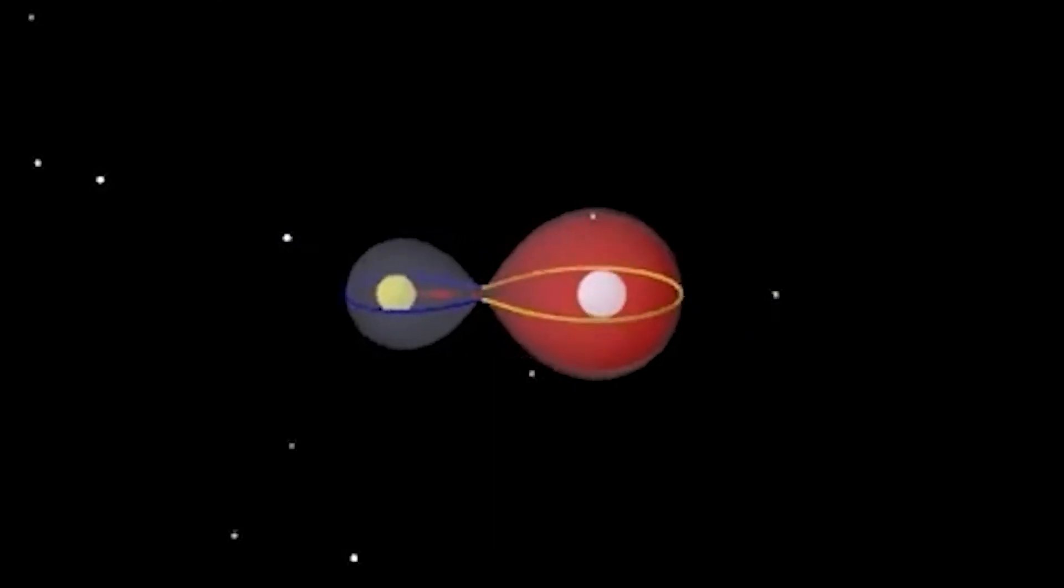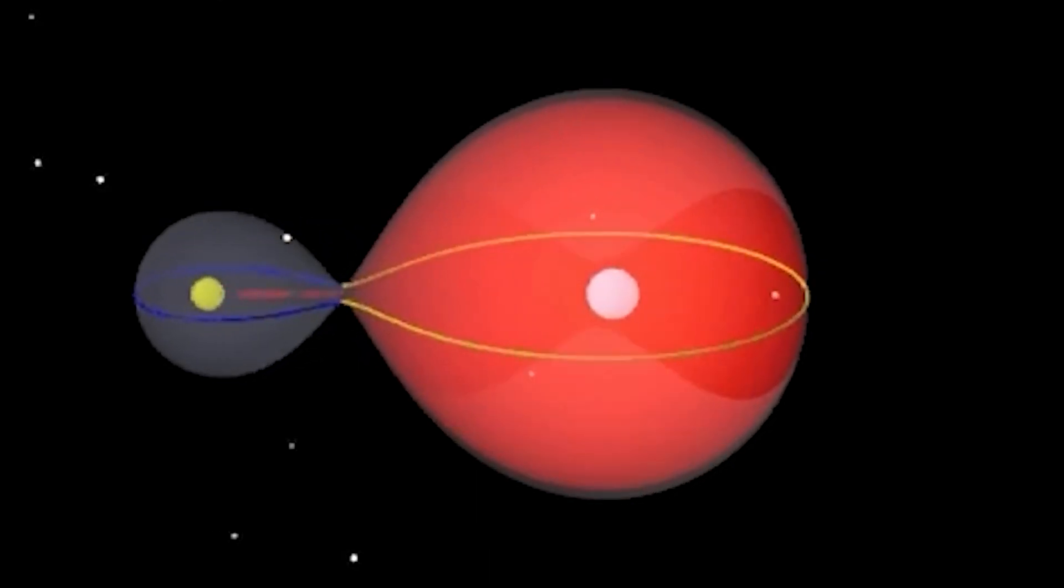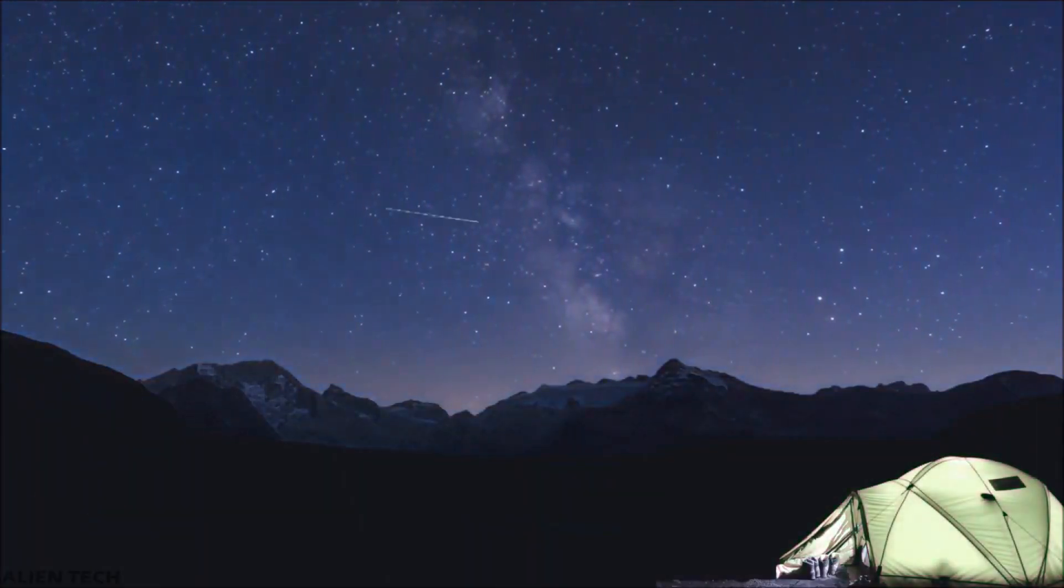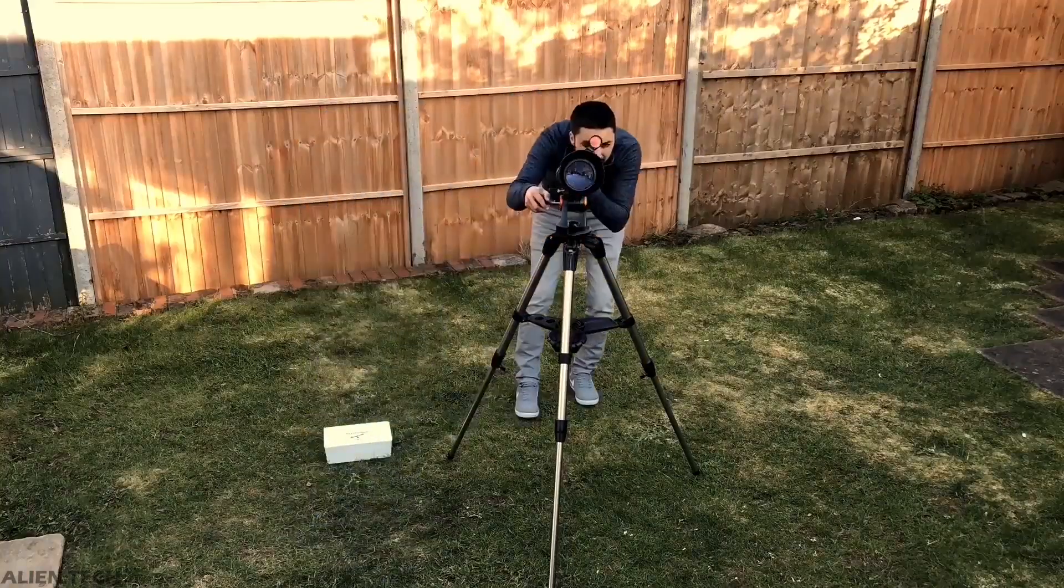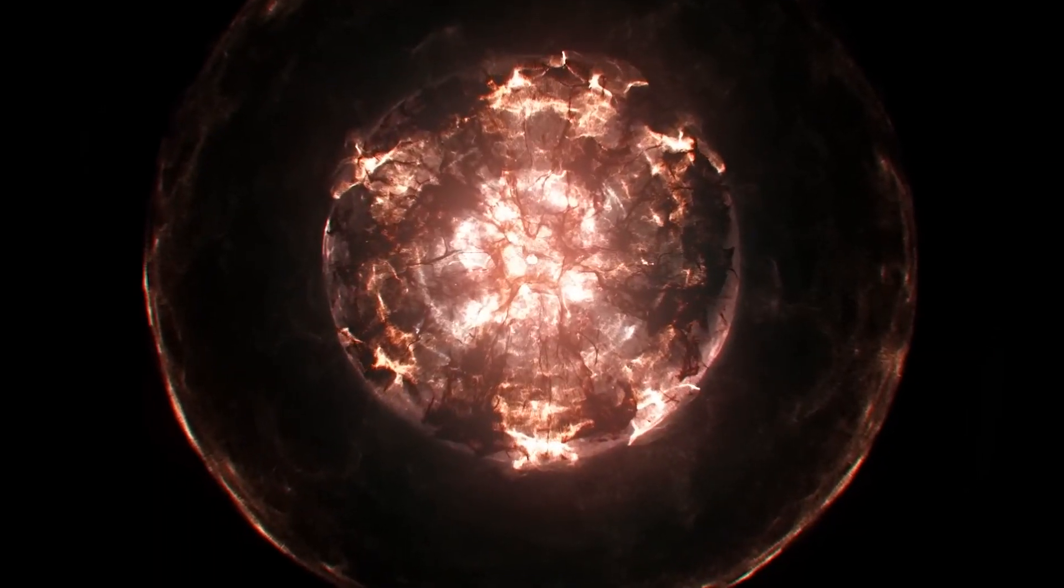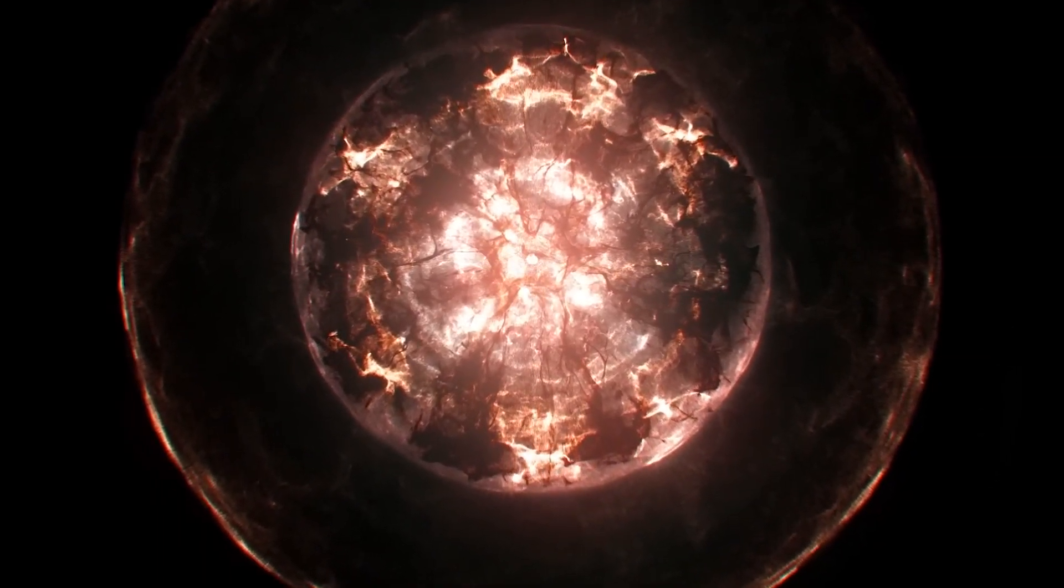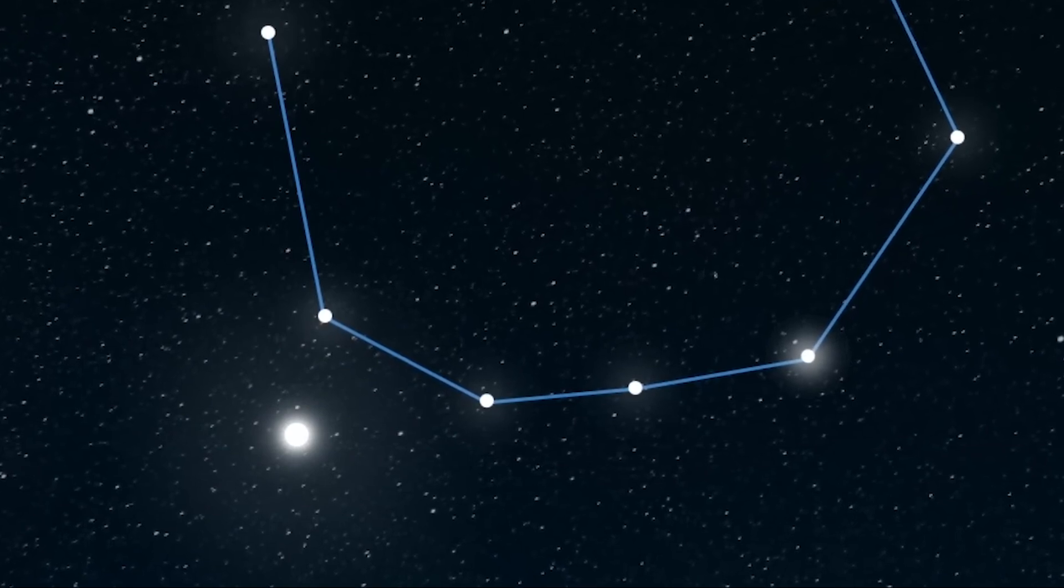And when TCRB explodes, it will brighten dramatically. It's expected to become visible to the naked eye, so you won't need a telescope or binoculars to see it. It won't look like a giant fireball or anything. It looks more like a bright star that suddenly appears in the constellation.